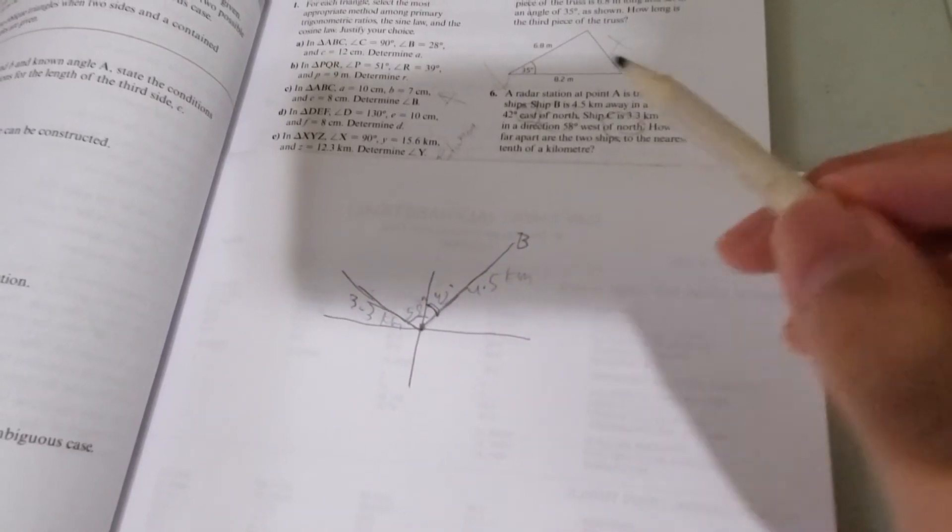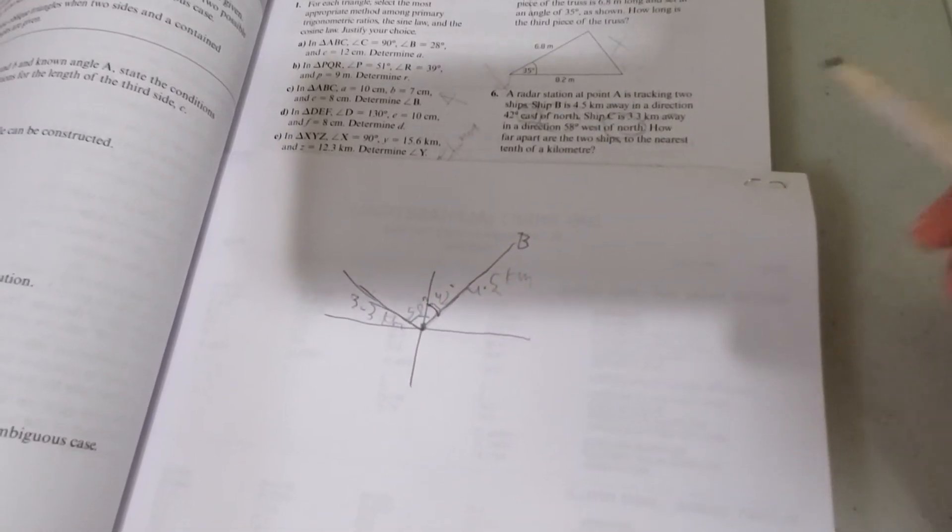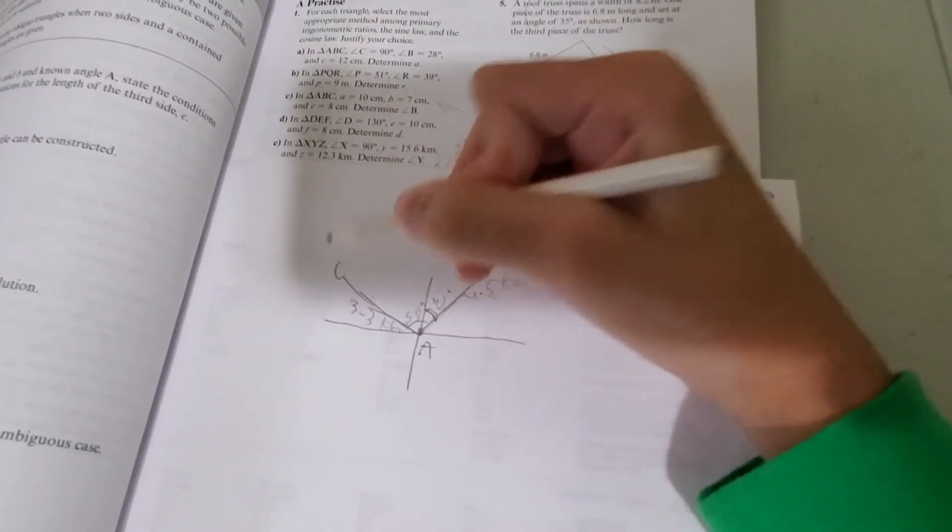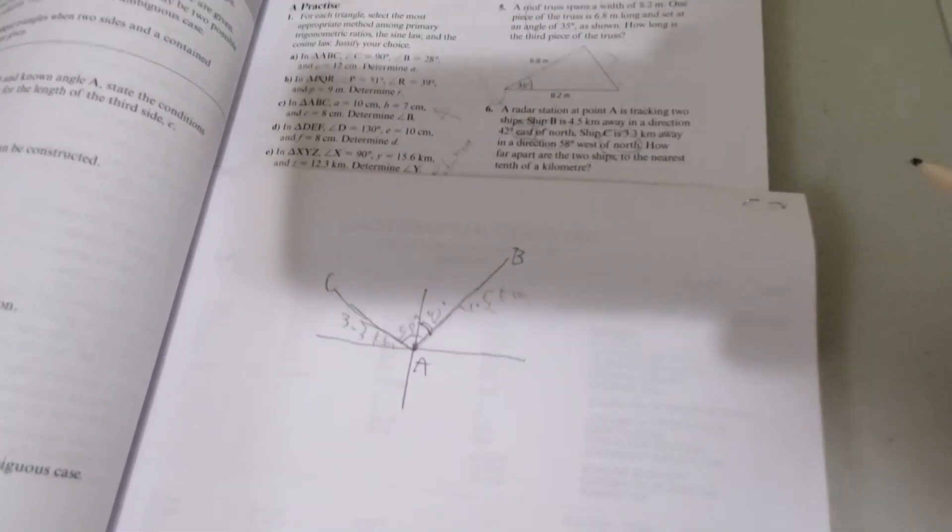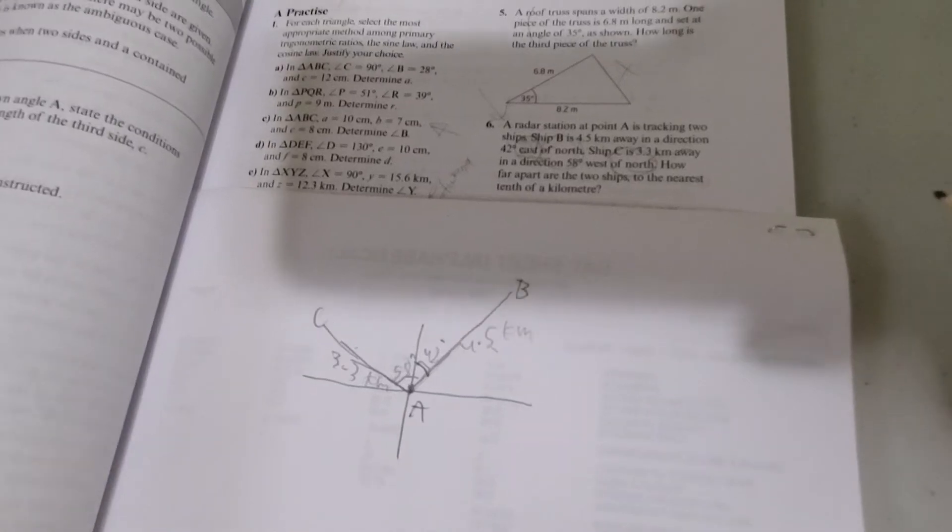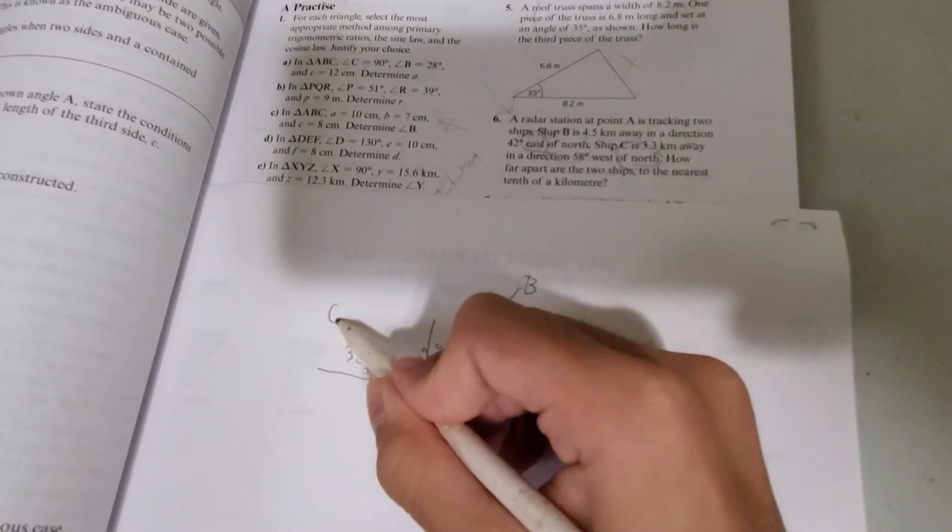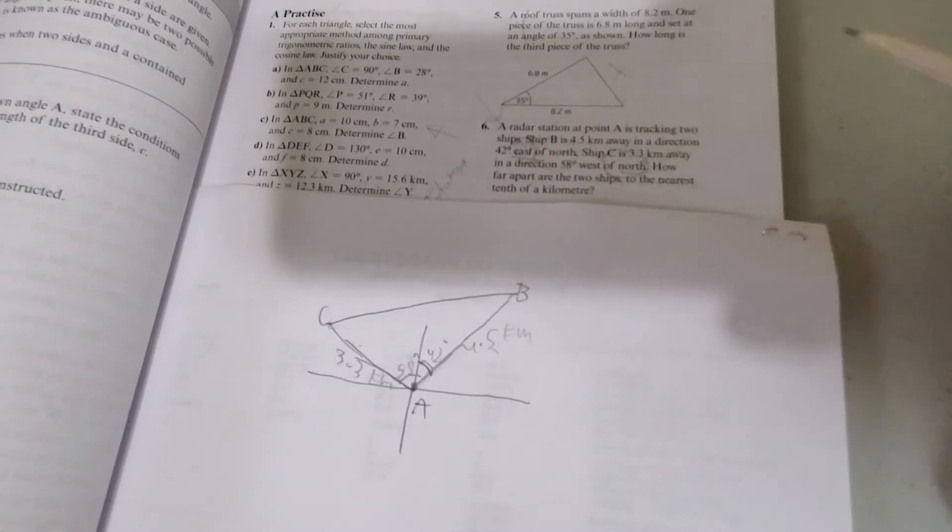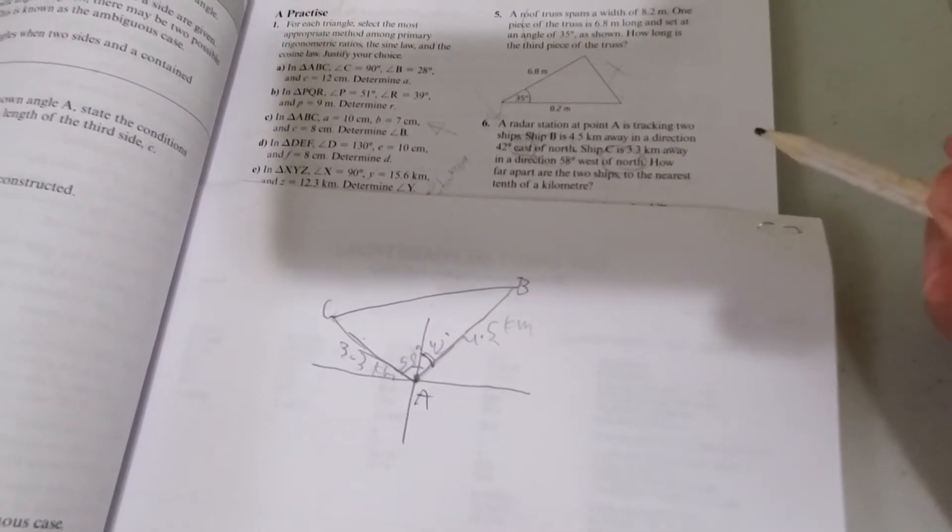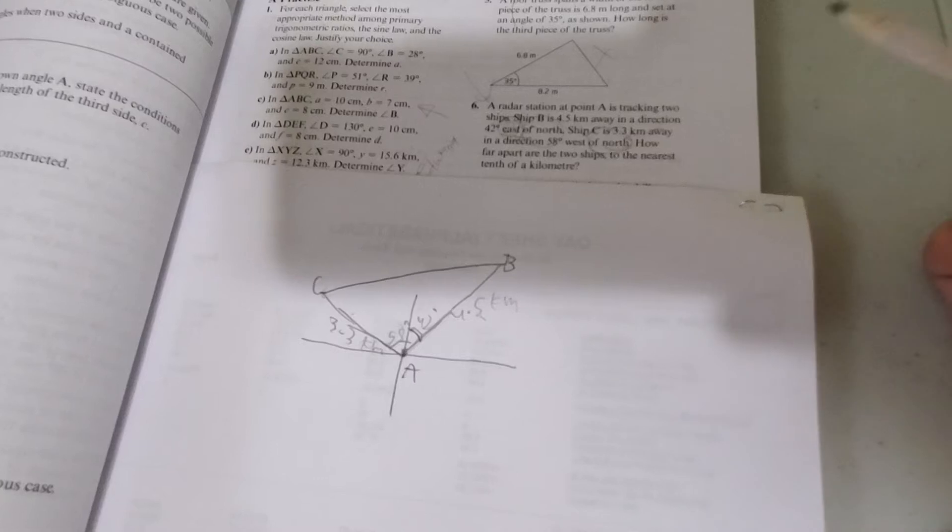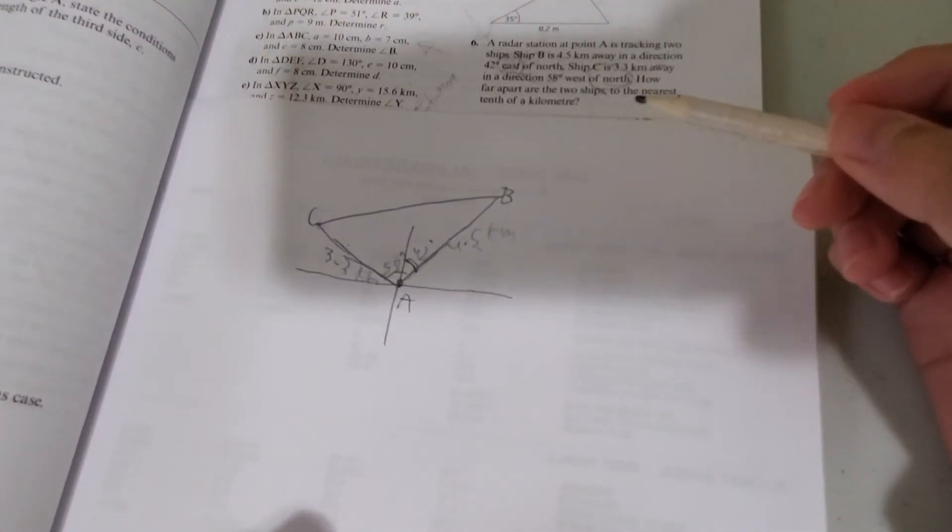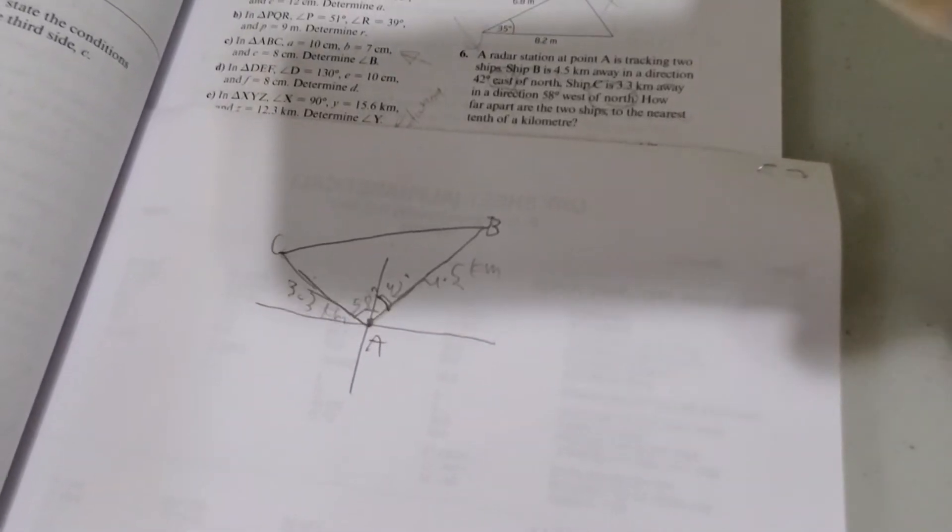So we have the 3.3 kilometers and we have the 4.5 kilometers. This is A. And this is C. So now we want to know how far apart the two ships are. Now, draw a line that connects C and B because we want to know this distance. How far apart are ship C and ship B? So how do we figure this out? We need to use the cosine law.